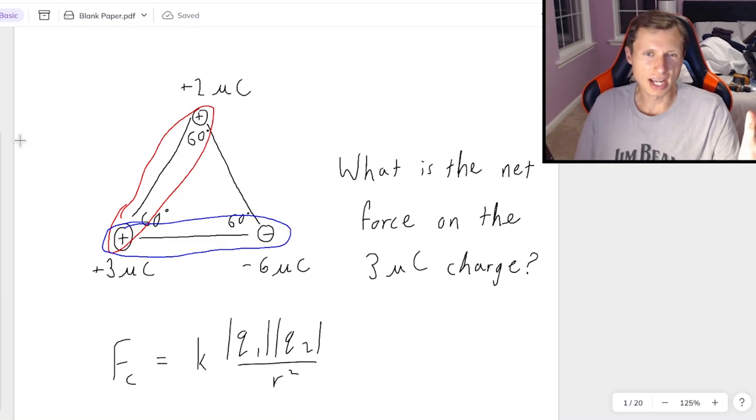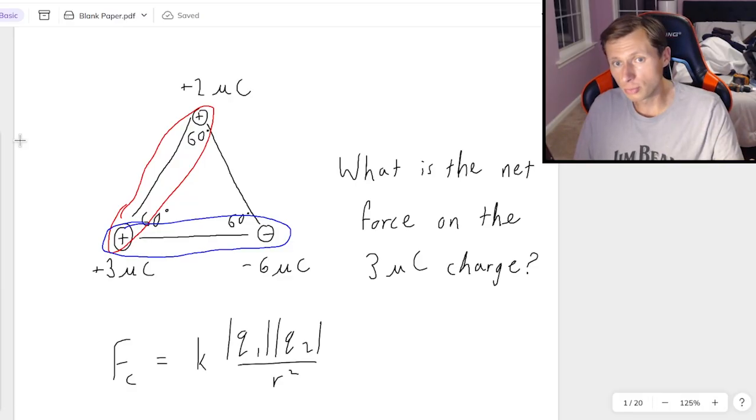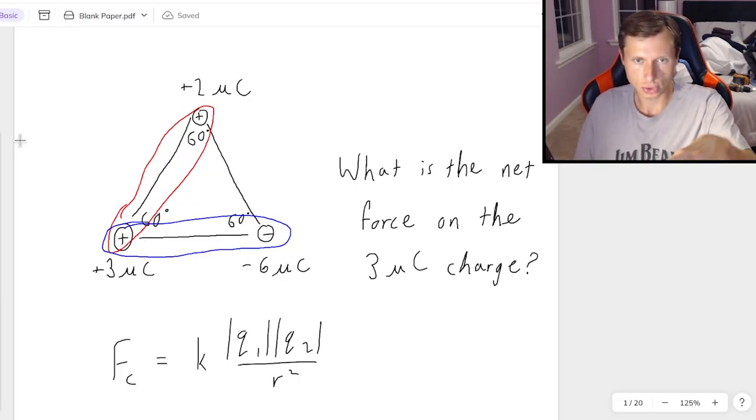Why twice? You're going to use the equation once for the interaction between the two positive charges, and then use Coulomb's law a second time for the force between the positive and the negative charge. Notice we do not want the force between these two charges, because that is not touching the 3 microcoulomb charge at all, so I don't care about it.